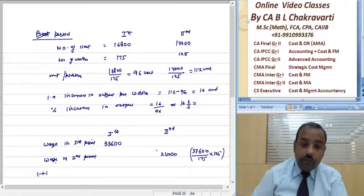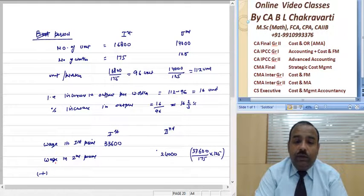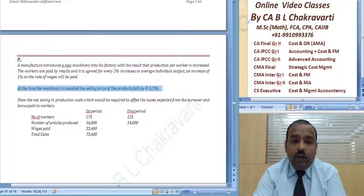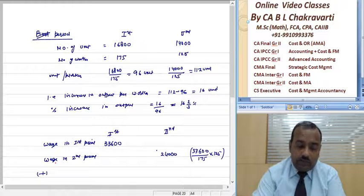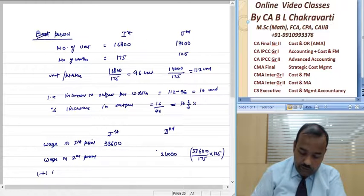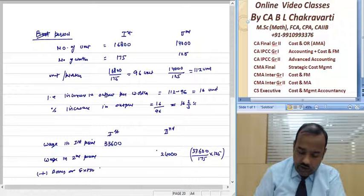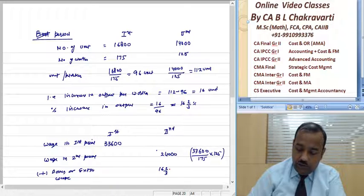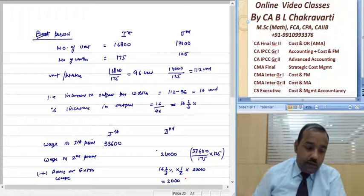Plus, because efficiency increases, so he has told us that every efficiency increases, on the basis of bonus or extra wages, is 16⅔ percent, one half into 24,000. So this is 2,000.